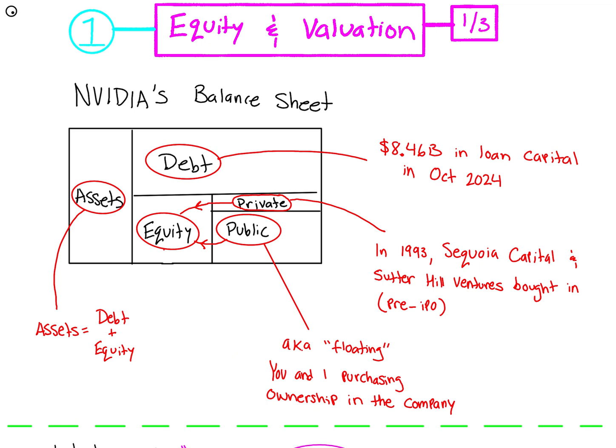Let's start off with equity and valuation, using NVIDIA as an example. Every company has a balance sheet. Debt is capital that NVIDIA will take on - borrowing money, for example 8.46 billion dollars in October 2024. Equity can be taken in the form of private or public ownership - in 1993, Sequoia Capital and Sutter Hill Ventures bought ownership into NVIDIA when it was pre-IPO. Assets can be calculated by simply adding debt and equity.